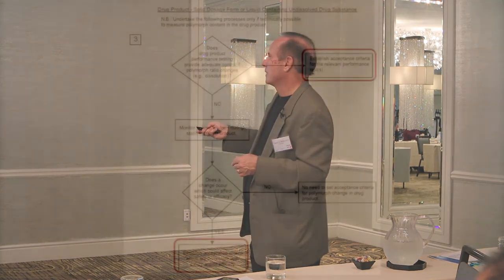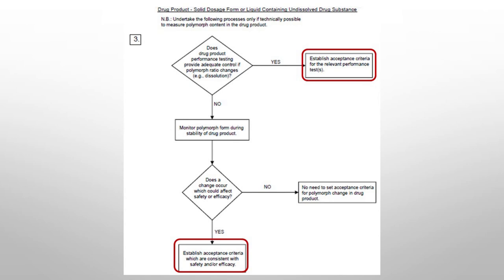There are other special occasions where you might actually have a quantitative method developed — I've done that on a few processes for specific reasons. Generally, you try to get to a qualitative method for identification of the form of your final product API. You monitor during your stability and accelerated stability testing to ensure that there are no interconversions of forms, and make sure that the form stays the same.